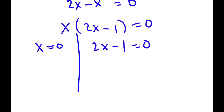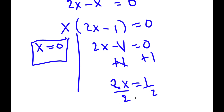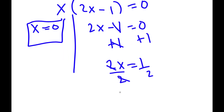For x equals 0, this is already a solution. For 2x minus 1 equals 0, I add 1 on both sides to get 2x equals 1, then divide by 2 on both sides to get x equals one half.